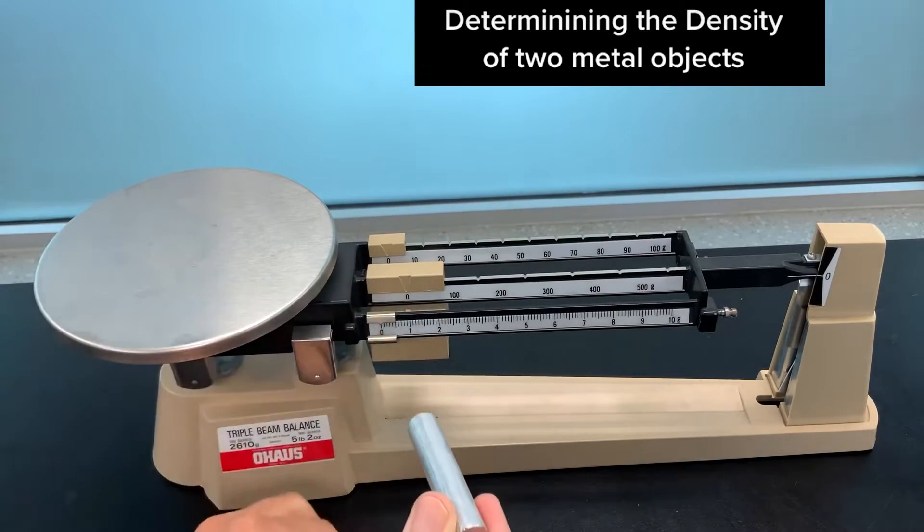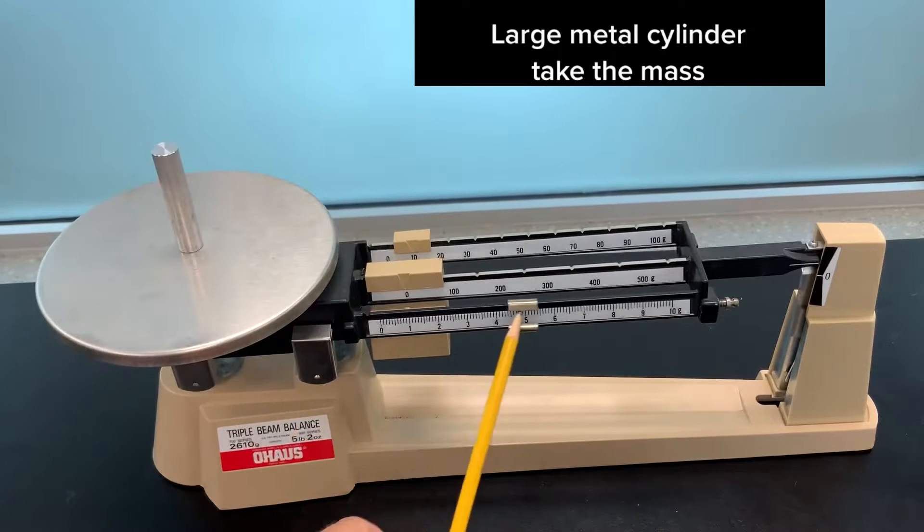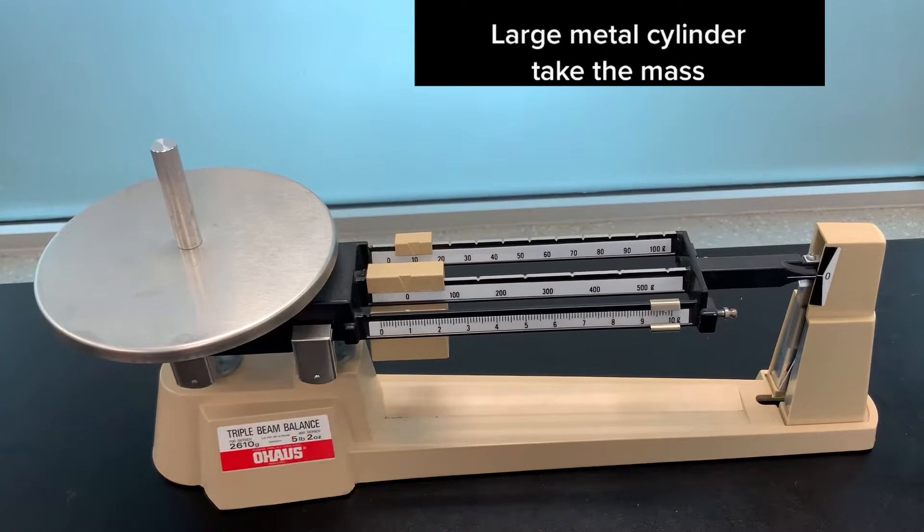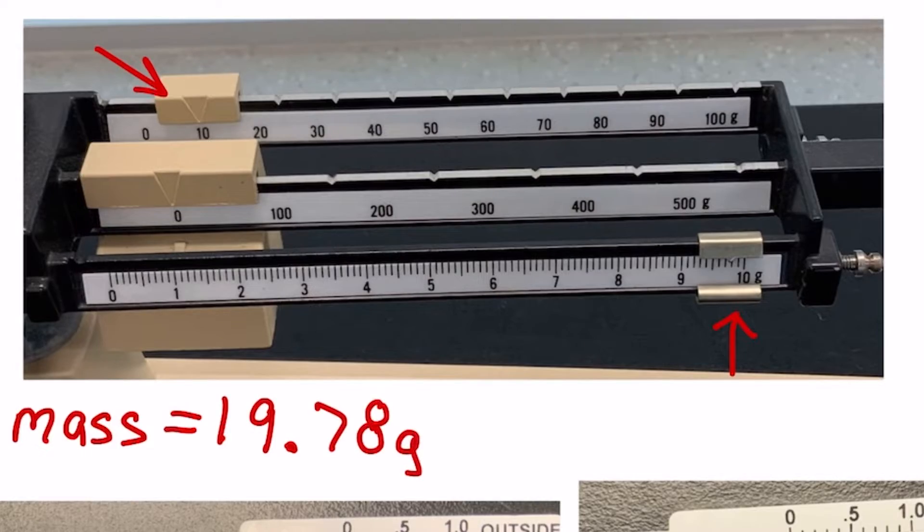Let's determine the density of these two metal objects I think are aluminum. First, the larger object. I'm taking the mass using a triple beam balance, and I find the mass is 19.78 grams.